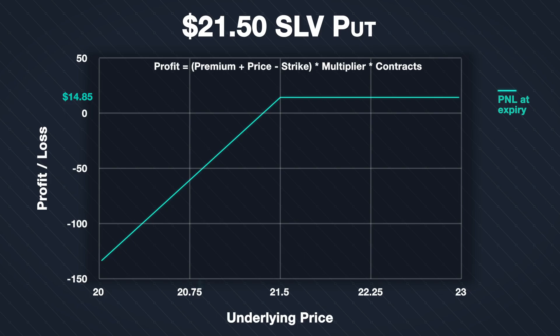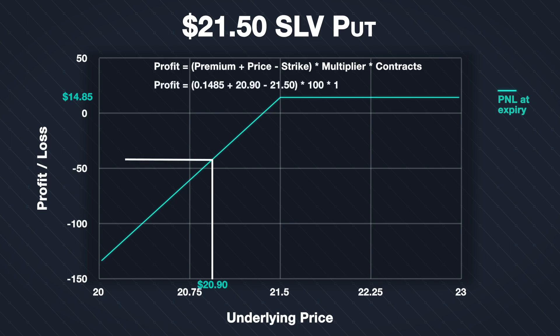As an example, if the price of SLV at expiration is $20.90, the calculation is: (0.1485 + 20.90 − 21.50) × 100 × 1, which gives negative $45.15. If SLV has fallen to $20.90, the right to sell at $21.50 is worth 60 cents per share, or $60 total. As the seller of the contract, this is a loss for us, but since we collected $14.85 in premium, our total loss is $45.15.